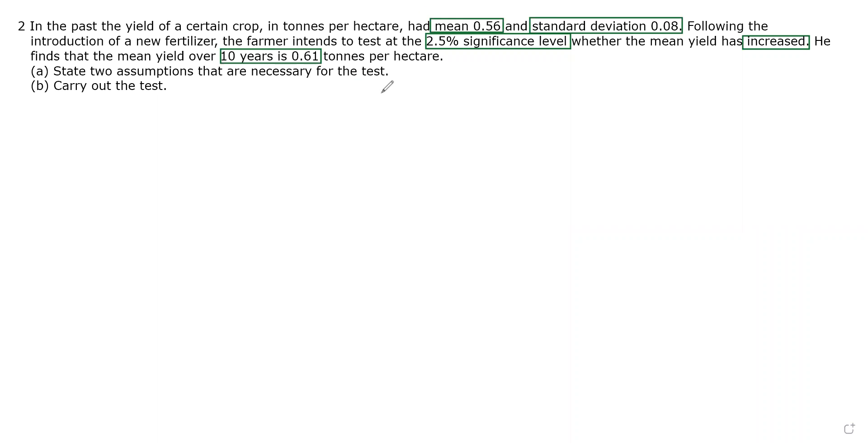Part A, we need to state two assumptions that are necessary for the test. We are given a standard deviation, so for this case we need to use the standard deviation to test. In order to do that, we need to assume that there is no change in the standard deviation, so the standard deviation remains at 0.08. The second assumption is that yields are normally distributed so that we can use the Z test statistics. There's no mention of normal distribution, so we need to make that assumption.